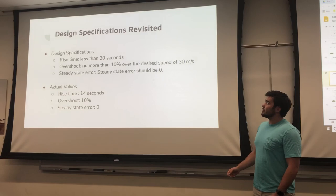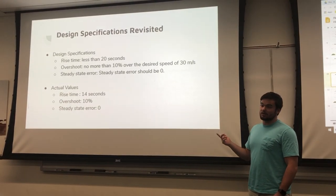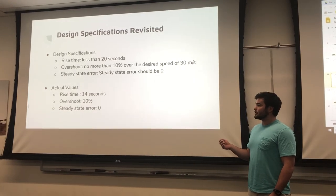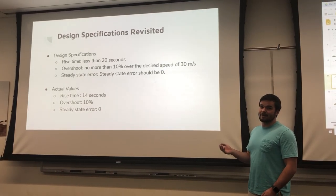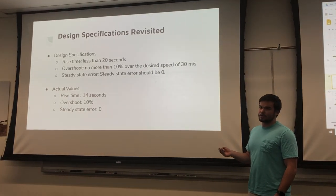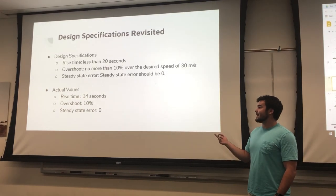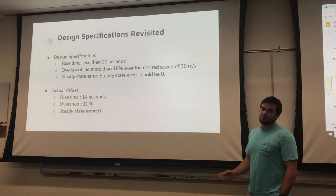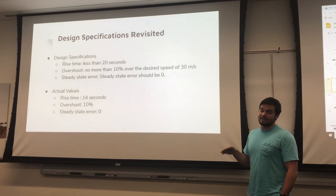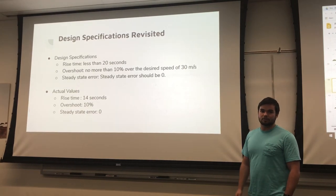Looking back on our design specifications, we met that our rise time is less than 20 seconds. We actually got it down to 14 seconds. Our overshoot ended up being pretty close to 10% over the desired speed of 30 meters per second. We reached 33.4 meters per second. Our steady-state error is zero. As time goes to infinity, the car will go to exactly 30 meters per second. All our design specifications were met with our controller.